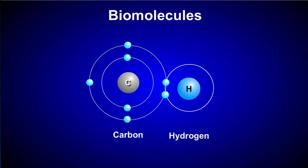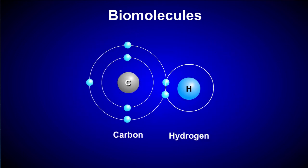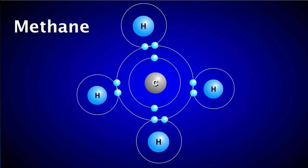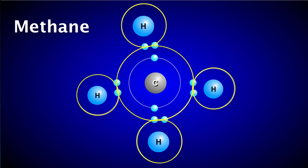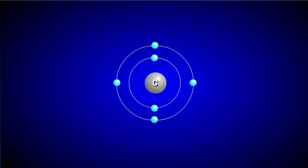Methane is one of the simplest organic molecules. Notice that the central carbon atom, by sharing electrons, has formed chemical bonds with four hydrogen atoms. Carbon is important for life because it's a very versatile atom.